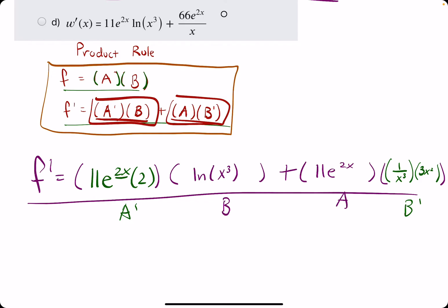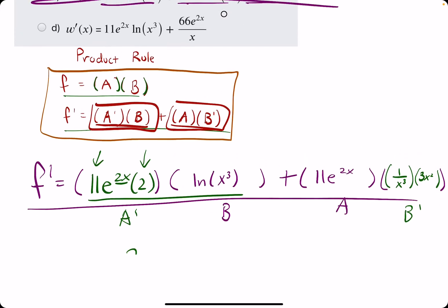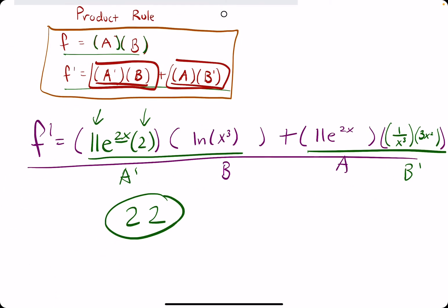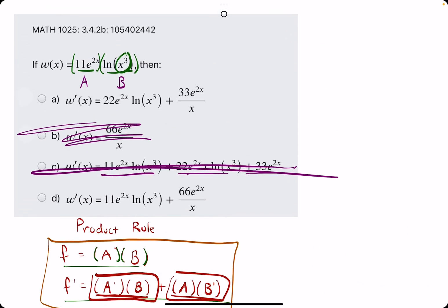Again, let's use that coefficient method we did in the last one. Across this whole term, what numbers can we multiply? We have 11 and we have 2, so 22. Again, across this whole term, we have an 11 and it looks like we have a 3, so 33. Do we see an answer with 22 and 33? We do. And so, we break out the eraser to see that a is our answer.